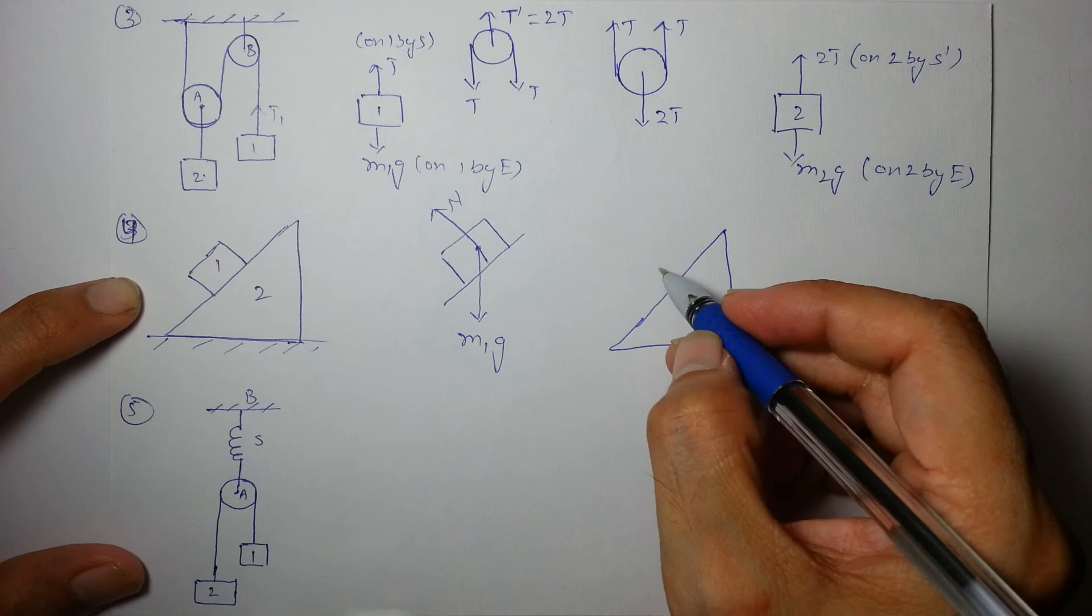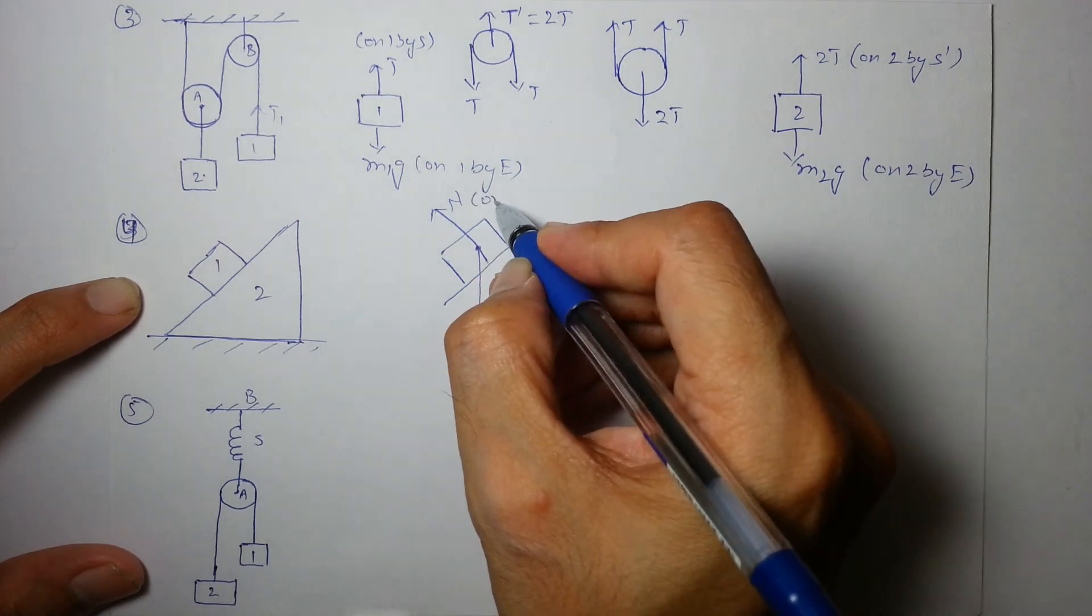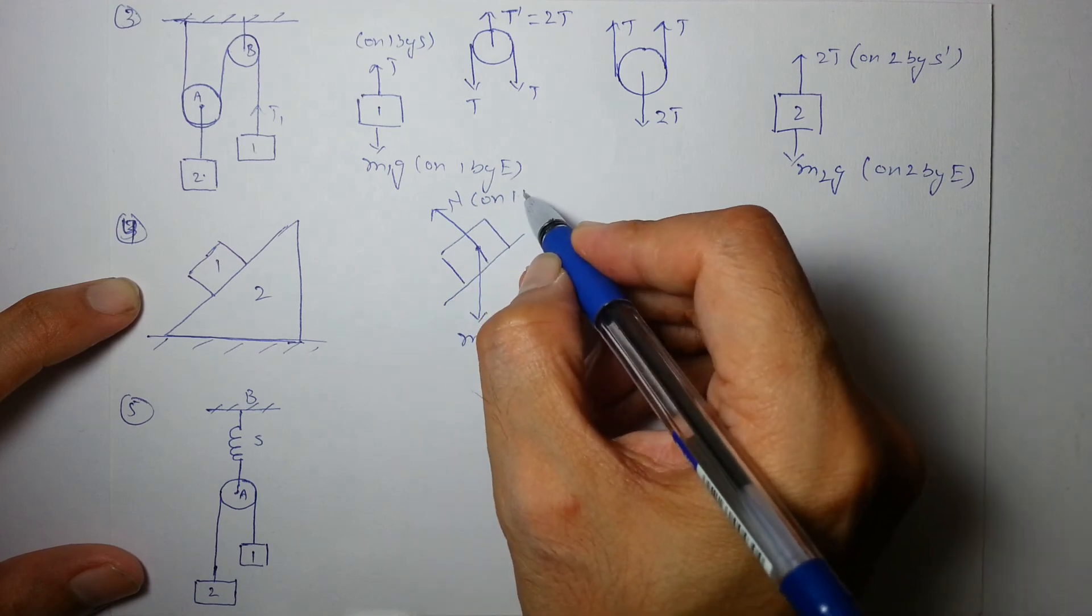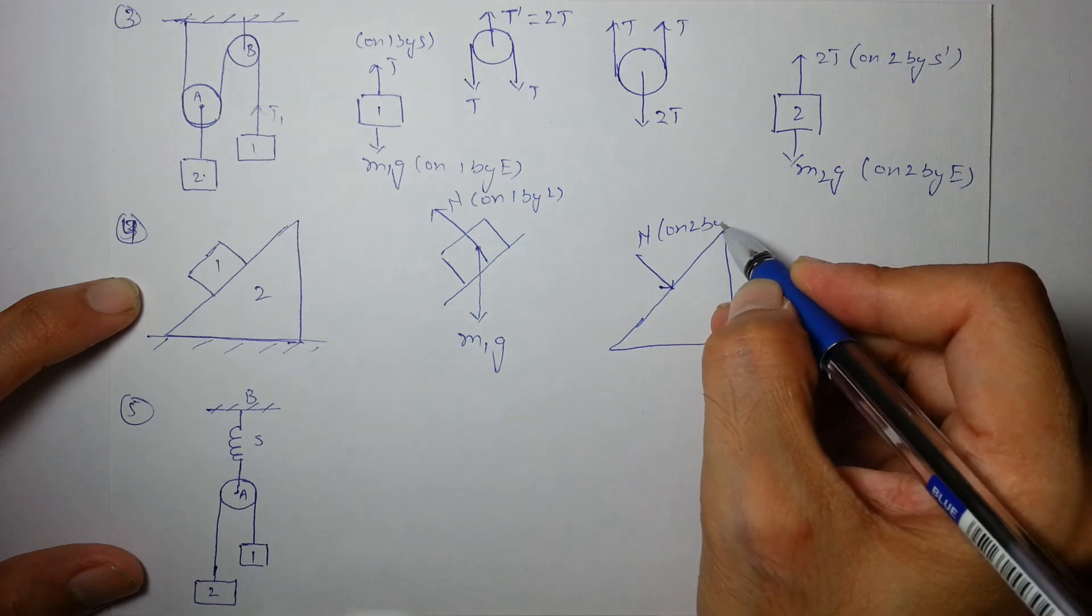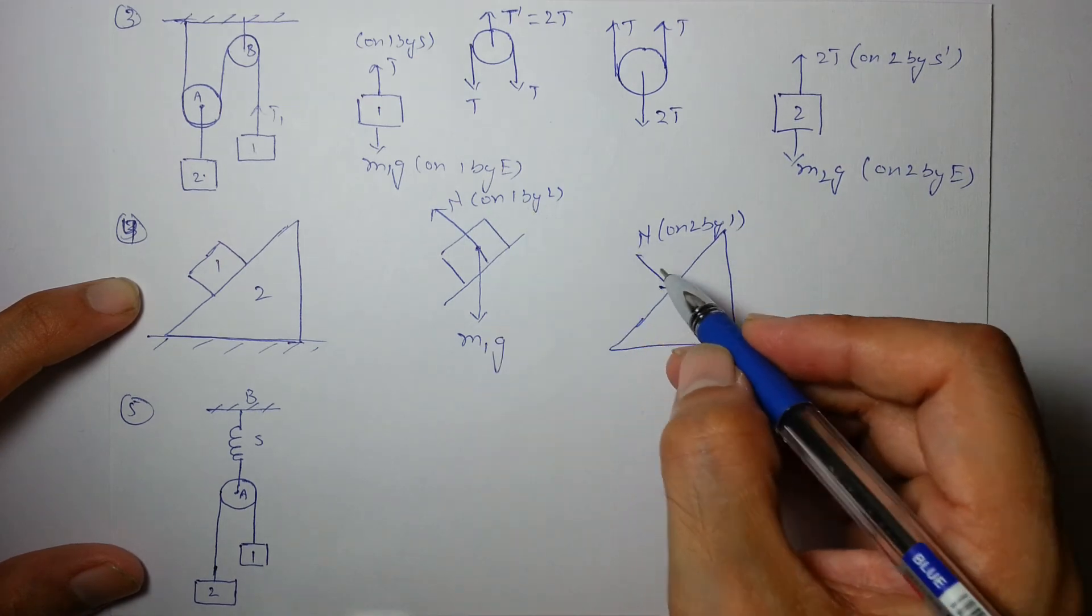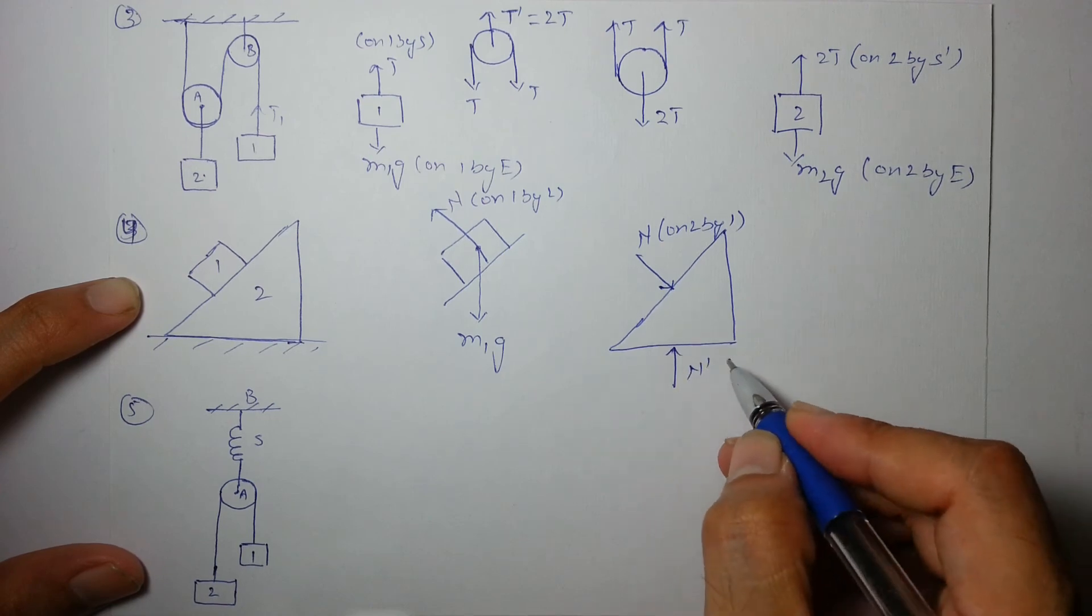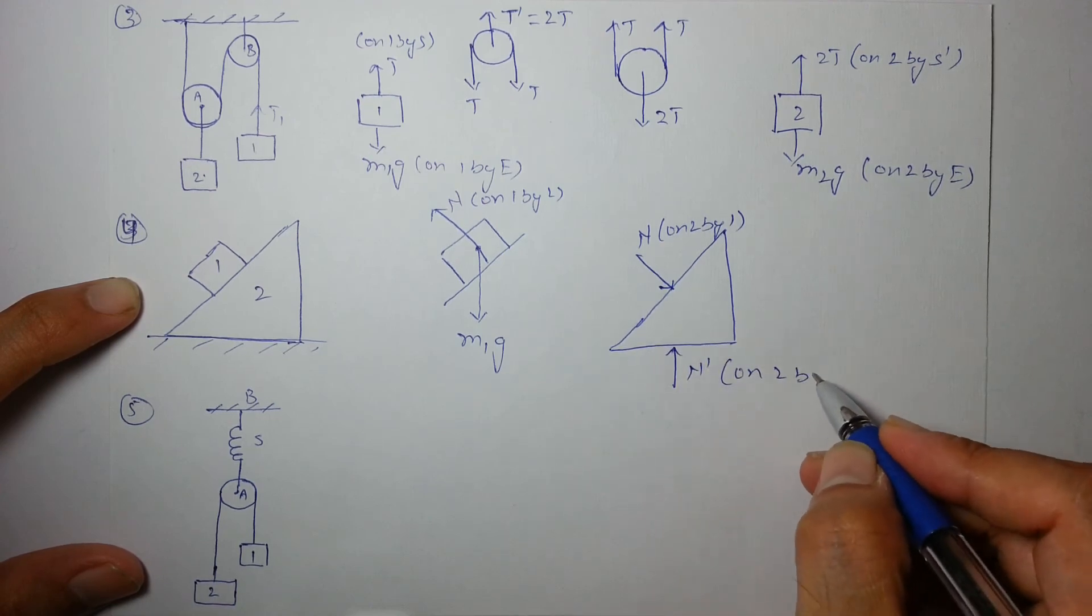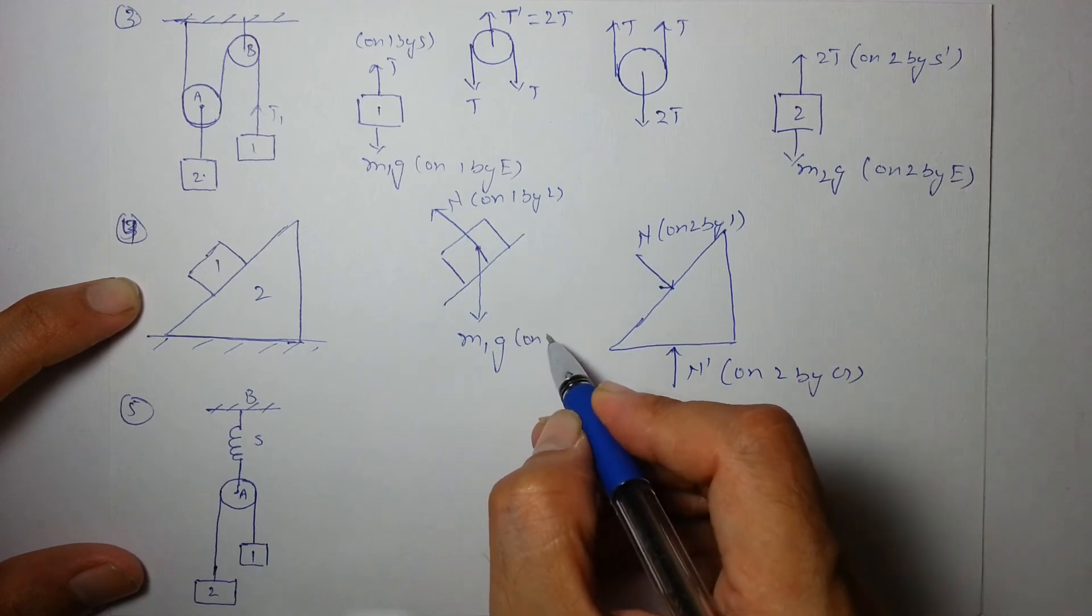So on this object 2, there is again normal reaction. This is on one by two, and this is on two by one. These are action-reaction pairs, must be equal and opposite as well. This is n dash on two by ground.